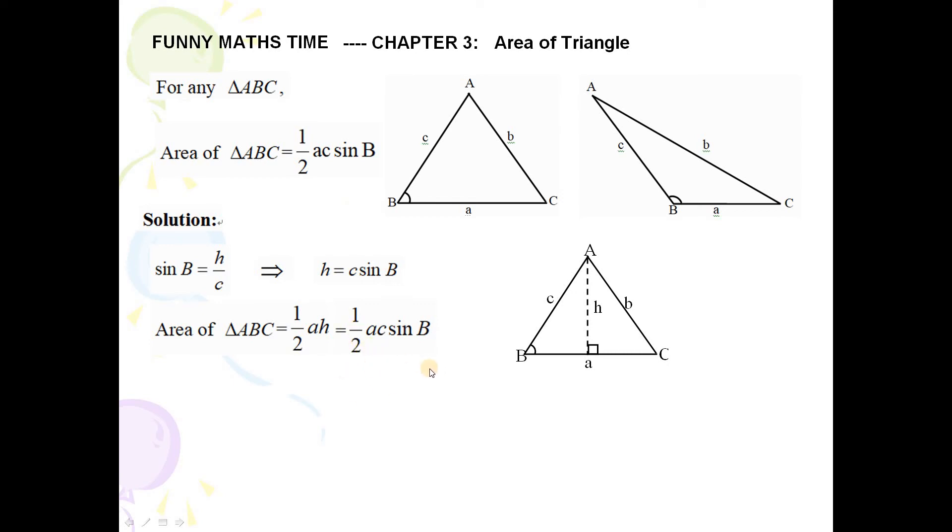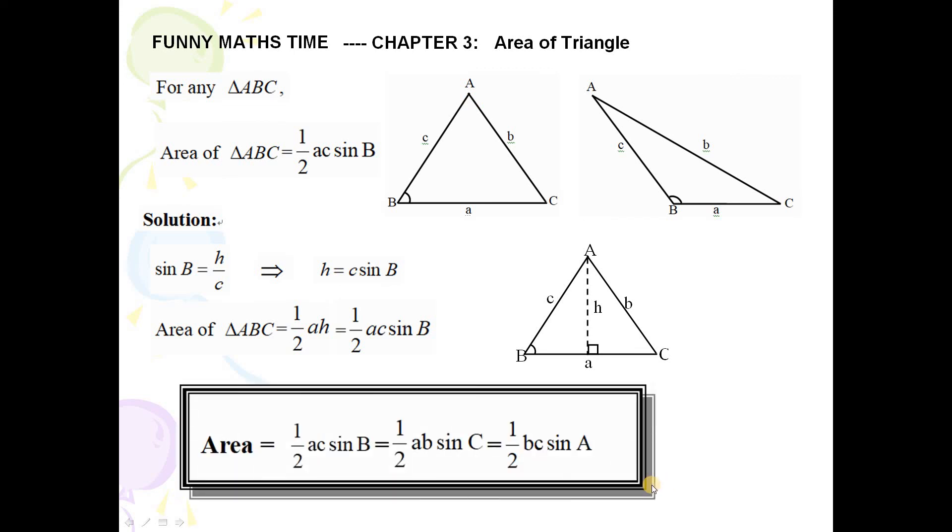And by the observation of this format of triangle ABC, we can similarly have another two formats of triangle ABC, which is equal to one over two times A times B times sine C, and also one over two times B times C times sine A. Therefore we have three formats of triangle ABC.